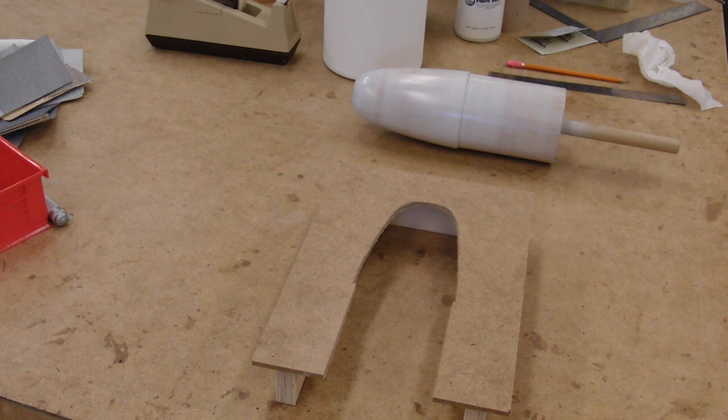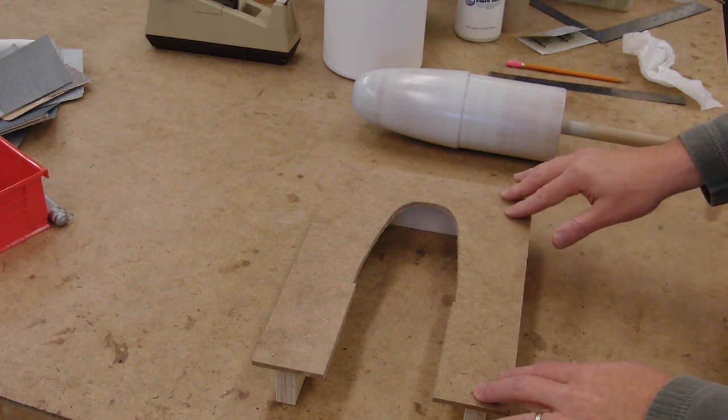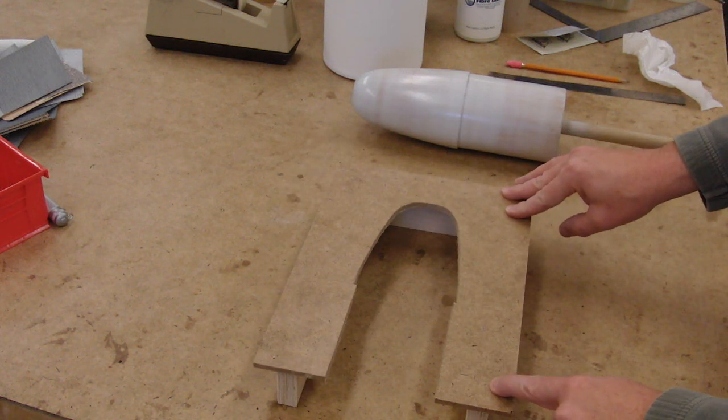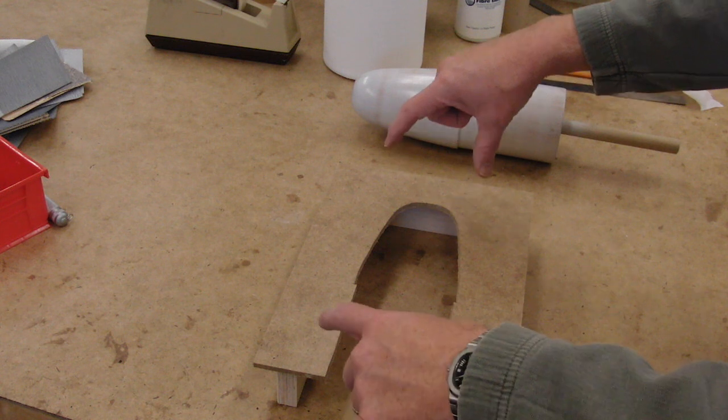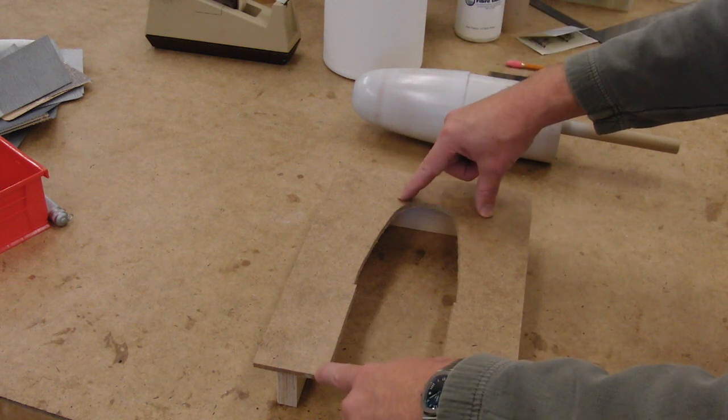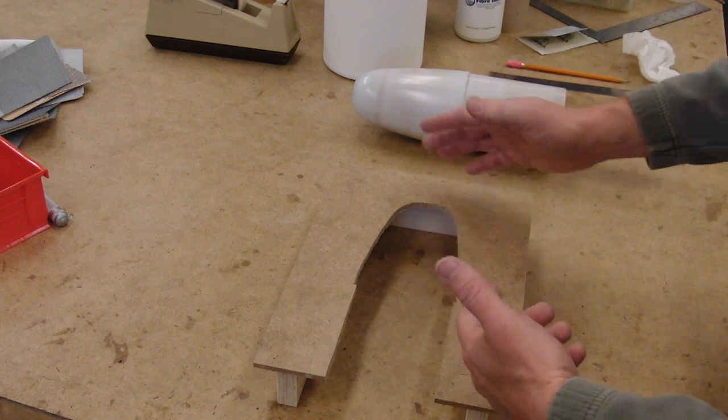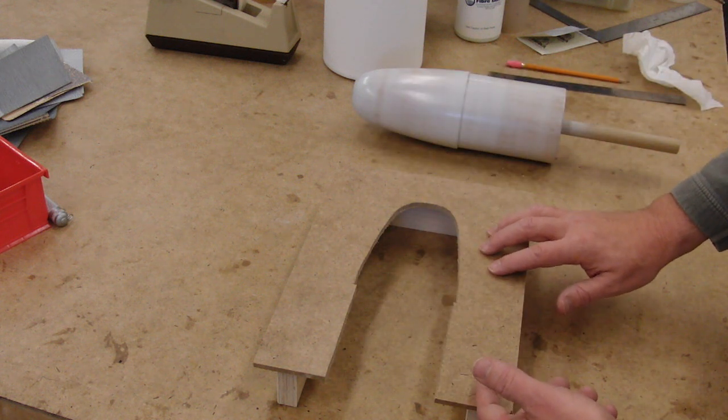Now that we have our plug prepared, it's time to work on the parting board. The parting board is a piece of masonite with some ribs. And the purpose of this is to allow us to bury the plug halfway in. Then we'll make the first half of the mold. Then we'll pull it out and make the second half of the mold.